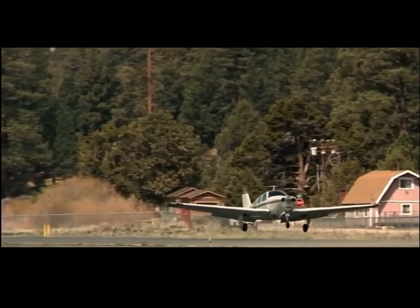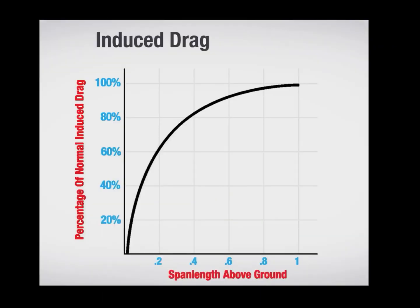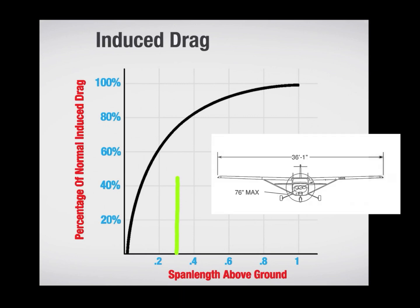An aircraft experiences ground effect when it is within one wingspan from the ground. As an example, a Cessna 172 SP has a 36-foot wingspan, so when the aircraft is only 10 feet from touchdown, it will experience 75 percent of its normal induced drag.